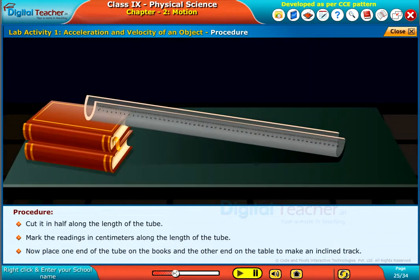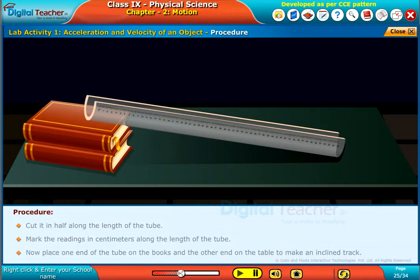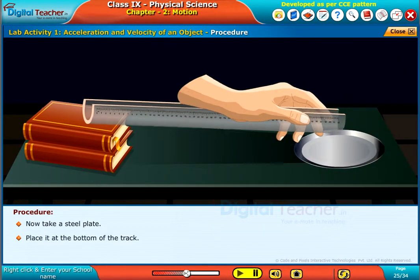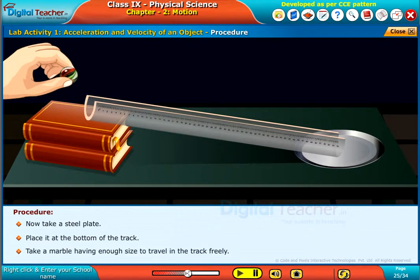Now place one end of the tube on the books and the other end on the table to make an inclined track. Now take a steel plate and place it at the bottom of the track.